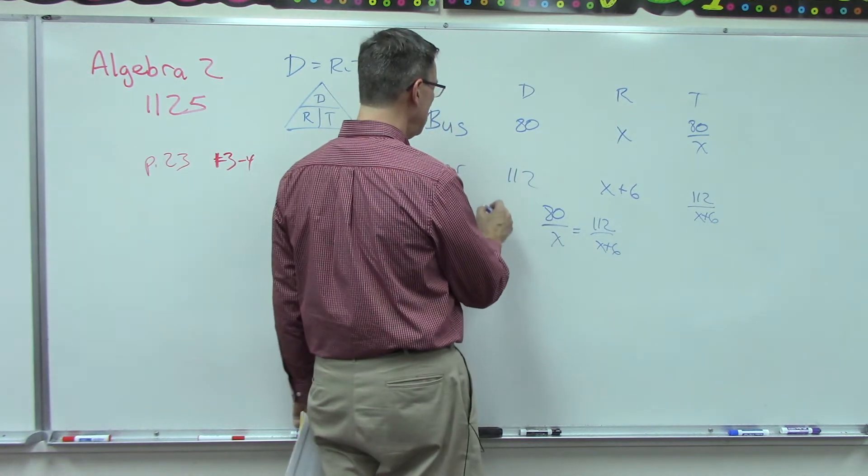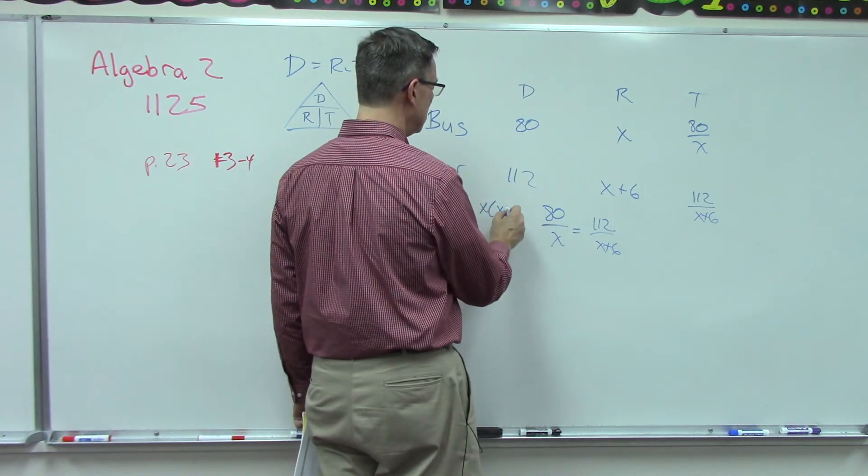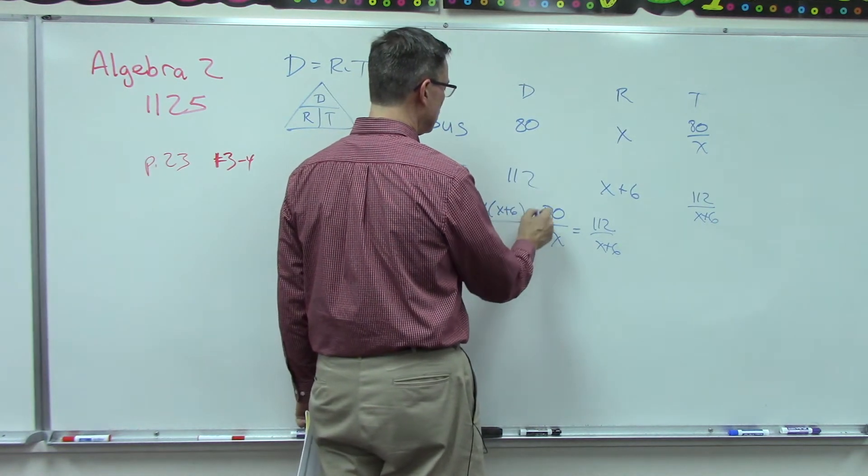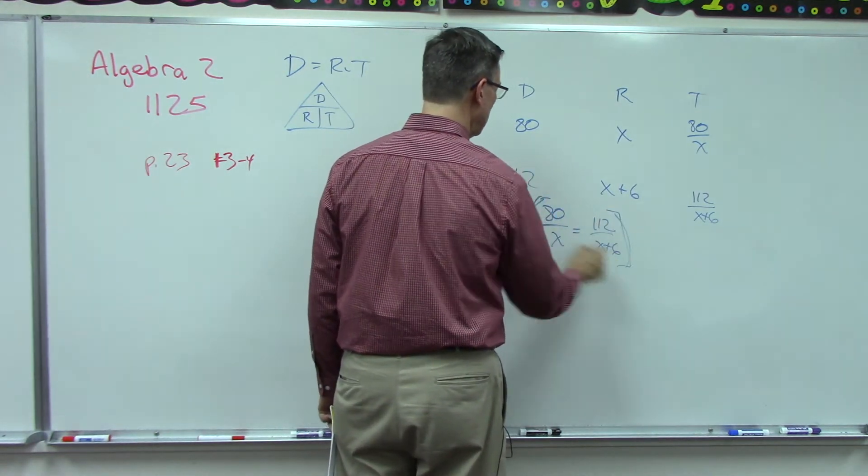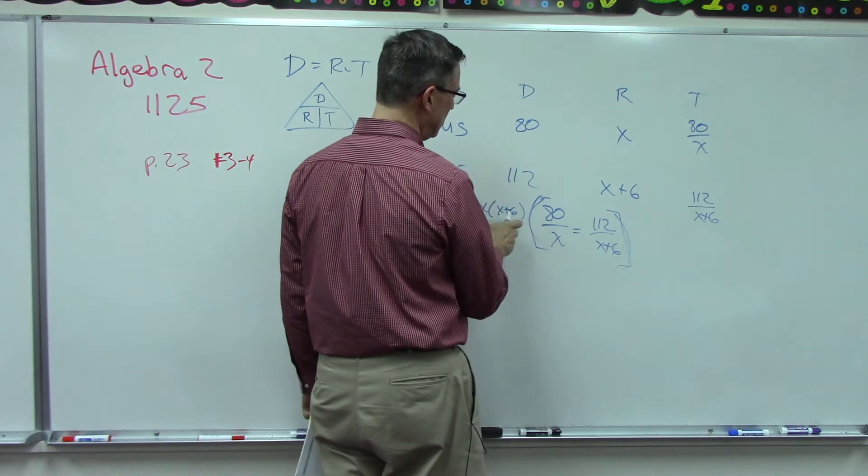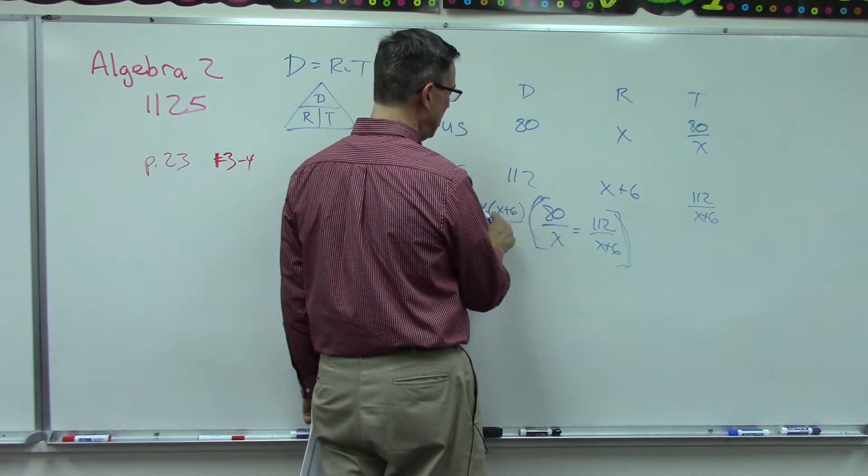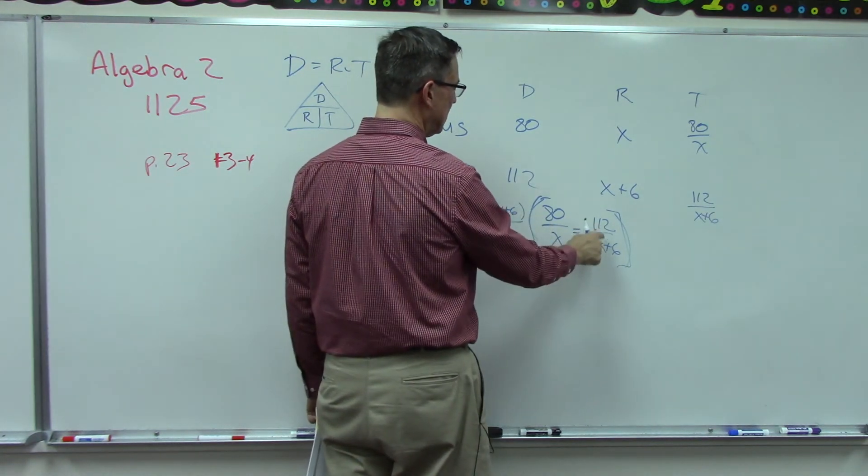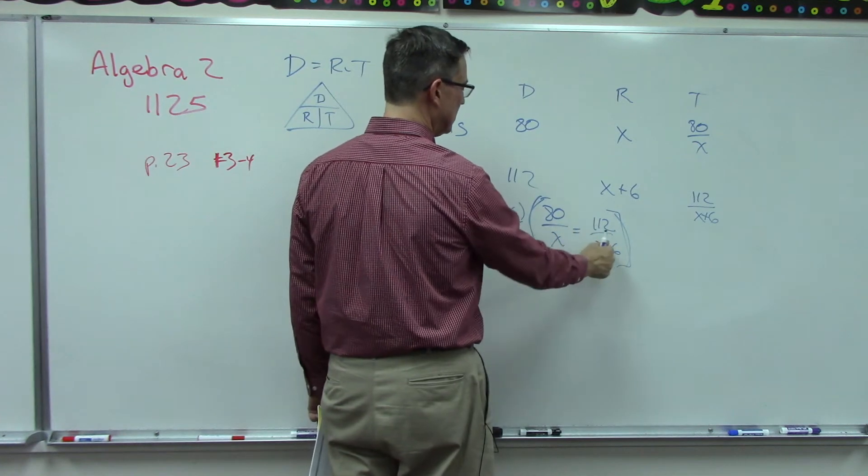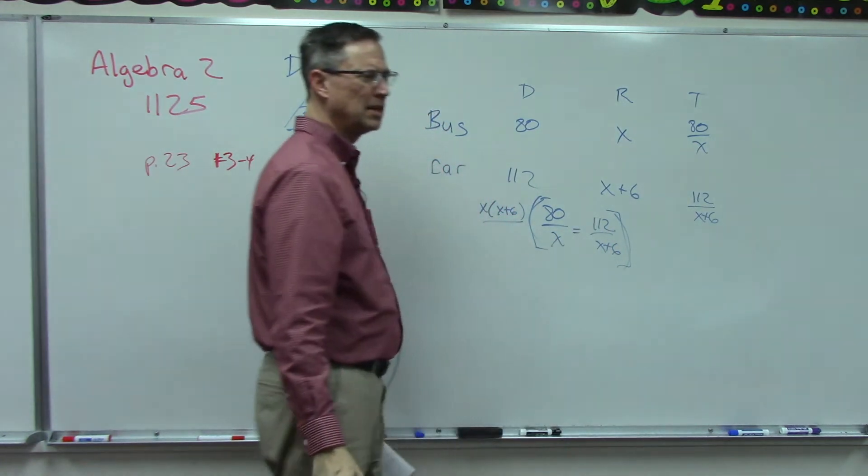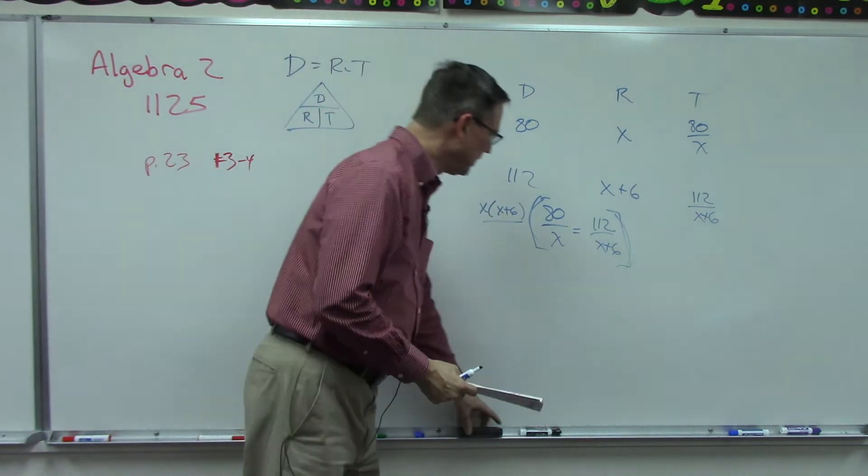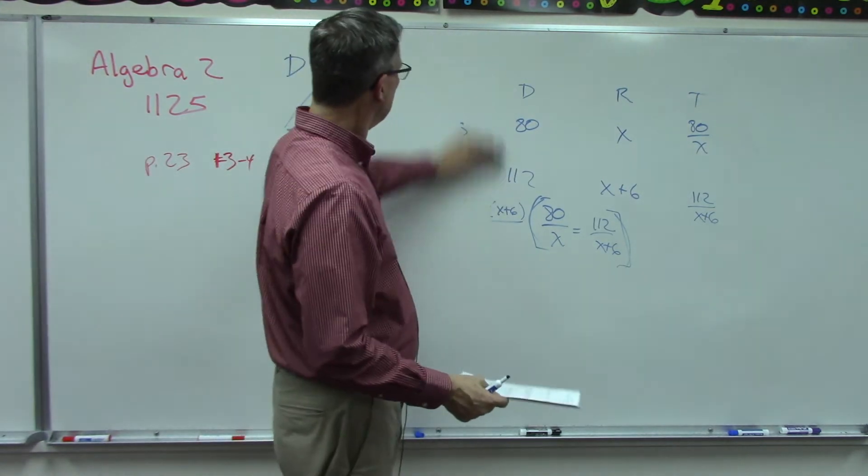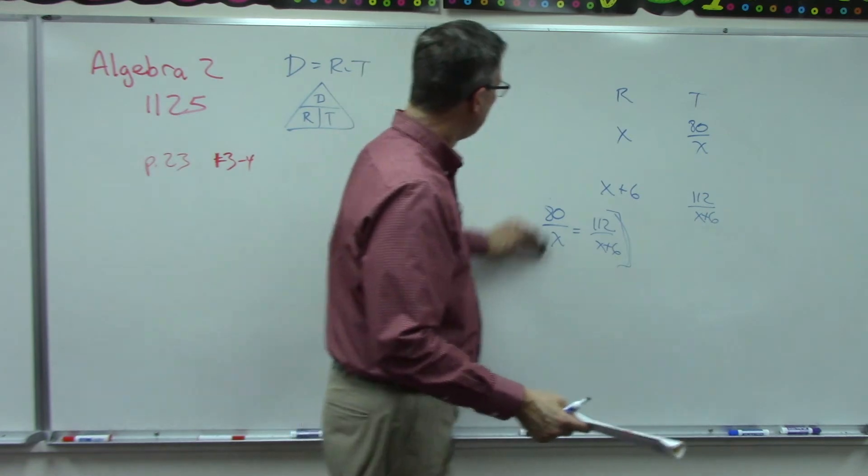Notice then, once I put this equals this, we can just find the common denominator x times x plus six and distribute it times the whole equation. Here the x cancels—you'll have 80 times x plus six, and then over here the x plus six cancels and you have 112 times x, and you just solve for x. Then you can go back and interpret that.